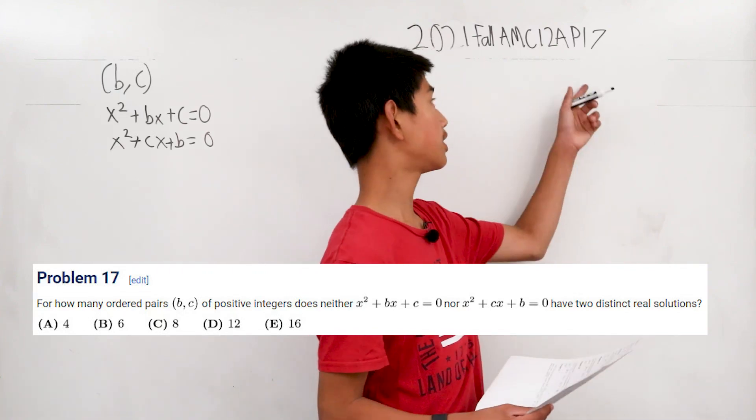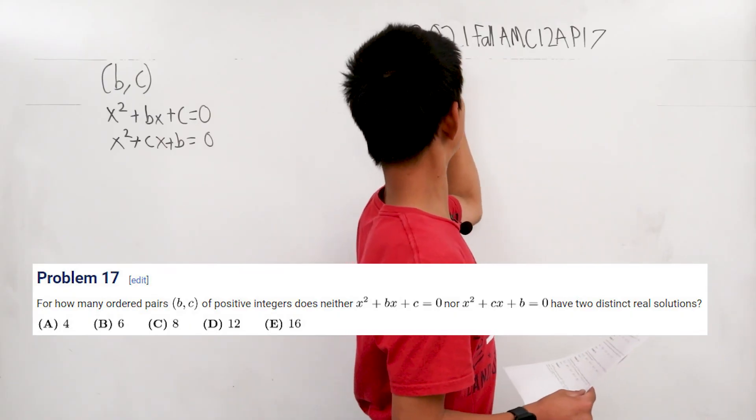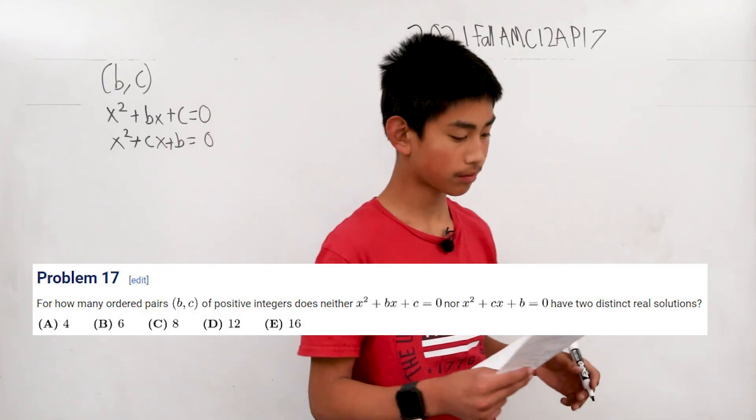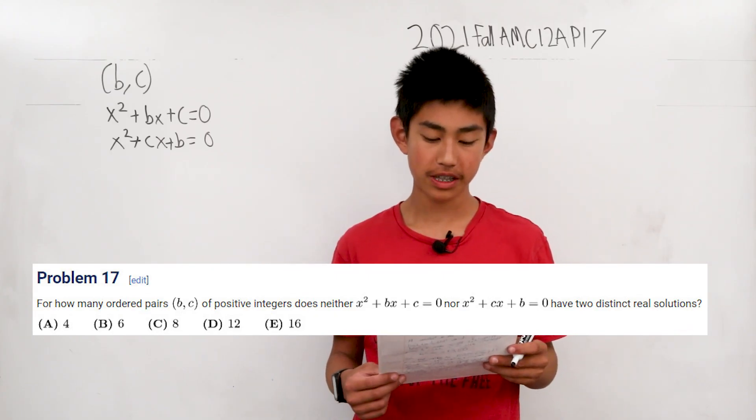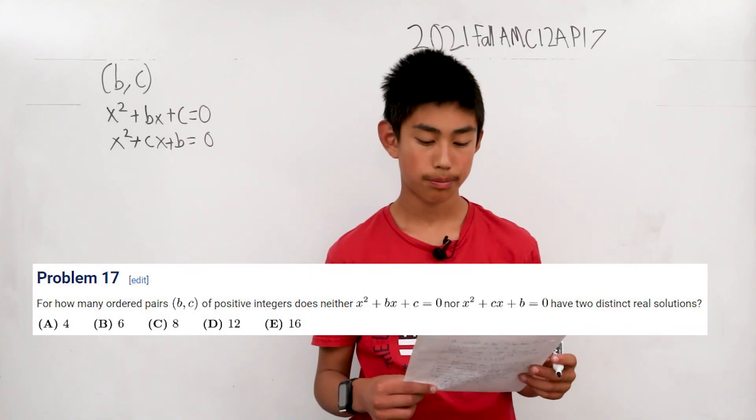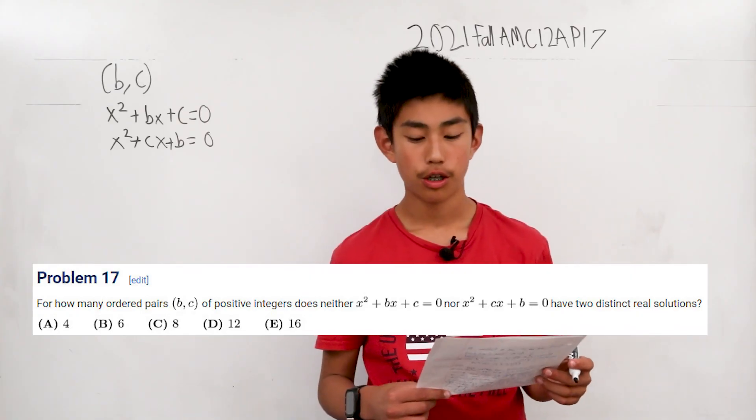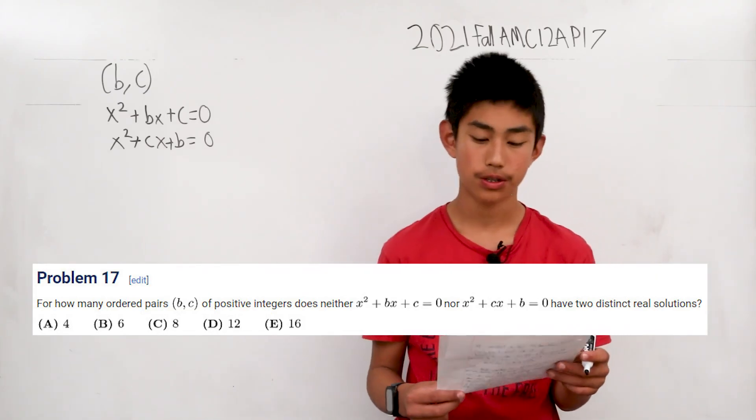We're solving problem 17 from the fall AMC 12A from 2021. For how many ordered pairs (b, c) of positive integers does neither x² + bx + c = 0 nor x² + cx + b = 0 have two distinct real solutions?